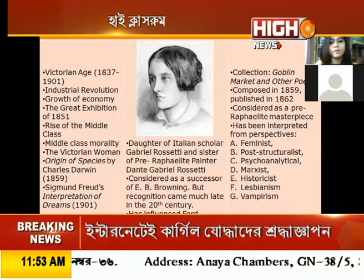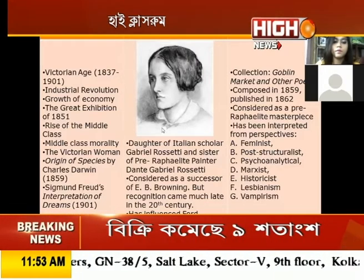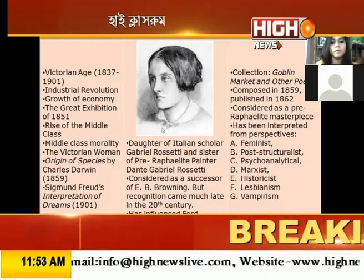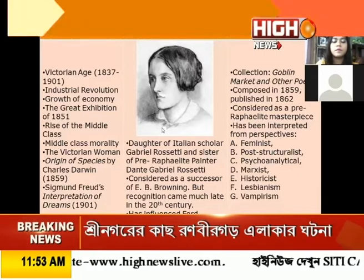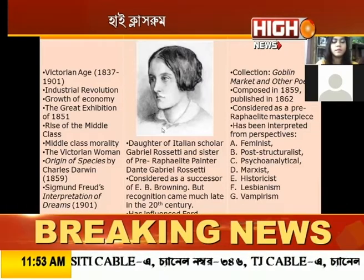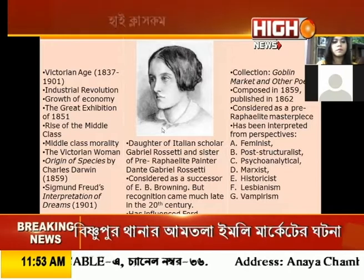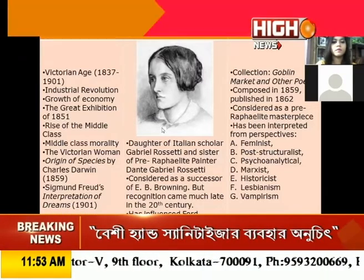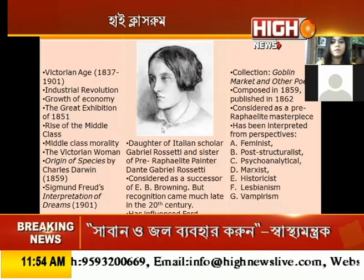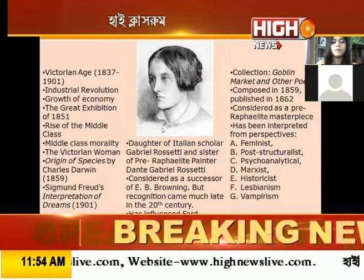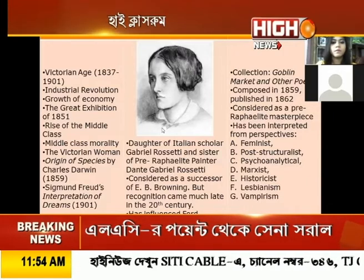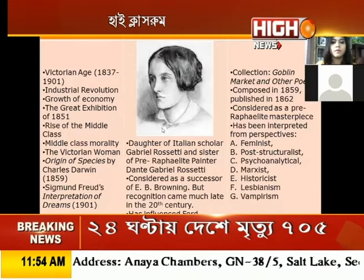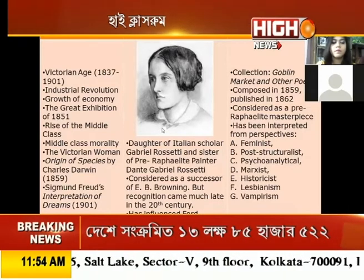Here we have the poet Christina Rossetti, a painting done by her brother Dante Gabriel Rossetti, who was a Pre-Raphaelite painter. She was also the daughter of an Italian scholar and their status was that of the middle class. She is very rightfully considered a successor of Elizabeth Barrett Browning, and her recognition came much later and influenced novelists like Ford Maddox Ford and Virginia Woolf. The text, Goblin Market, is found in the collection Goblin Market and Other Poems, composed in 1859 and published in 1862, and is considered a Pre-Raphaelite masterpiece.